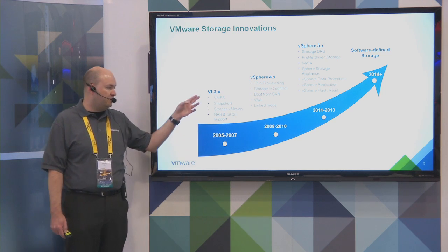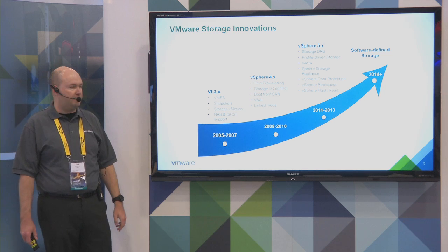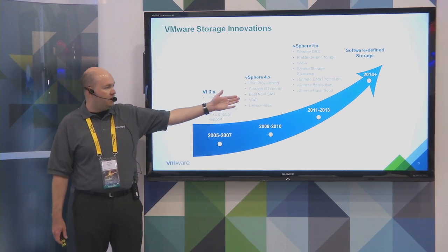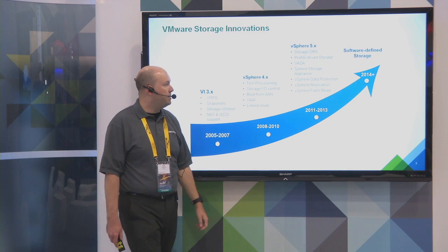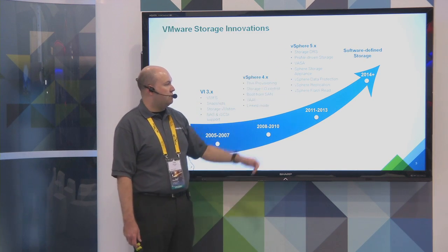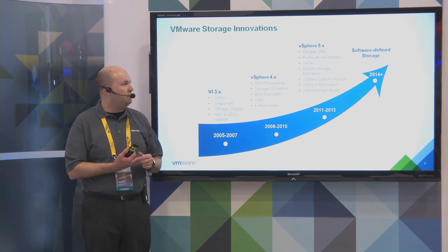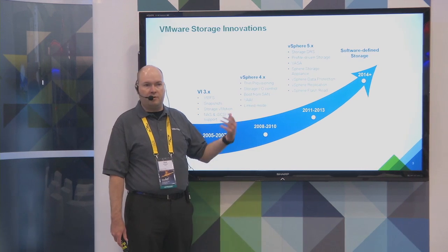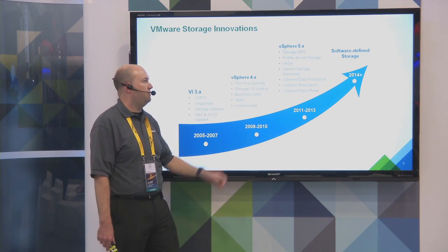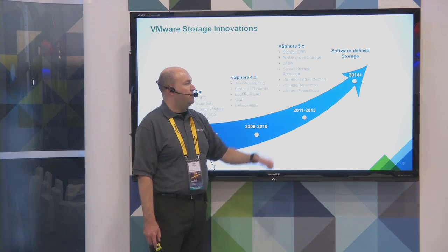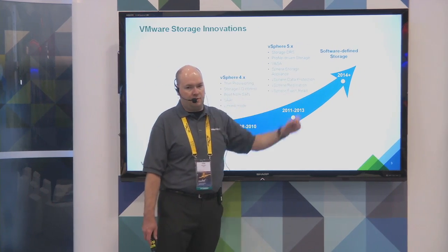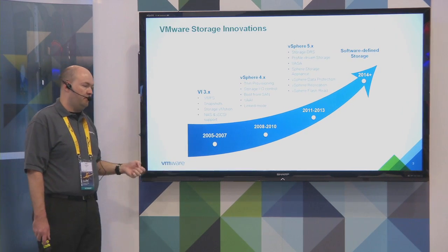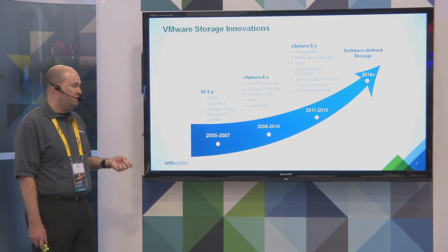With vSphere, or Virtual Infrastructure 3, we introduced NAS and iSCSI support. In version 4, we added thin provisioning at the virtual machine level, as well as integration with storage arrays via VAAI. With version 5, we had additions in terms of automating placement of virtual machines with Storage DRS, the vSphere APIs for Storage Awareness, whereby the storage array can tell us what it's capable of. That ties into our profile-driven storage, which leads us to software-defined storage — taking storage profiles and defining the virtual machine based on the performance and redundancy characteristics we want.